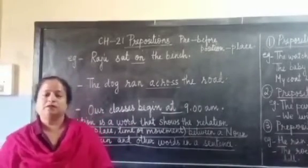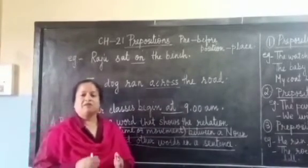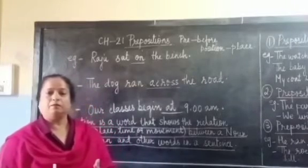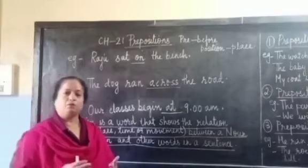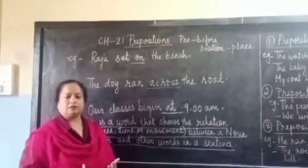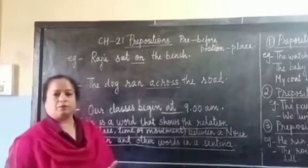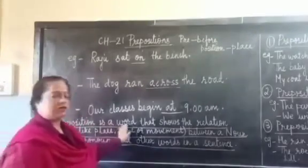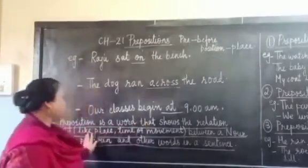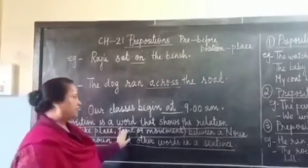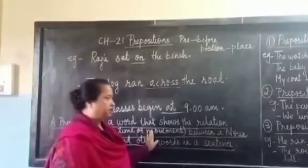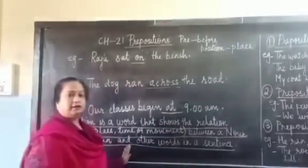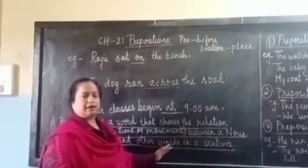So what do you understand by the word preposition? If I divide the word preposition into two parts: 'pre' means before, and 'position' means place. A preposition is a word that shows us the relationship — like a place, a time, or any kind of movement — between a noun or a pronoun and other parts of a sentence.